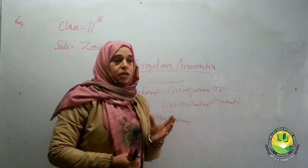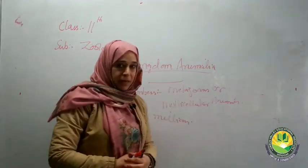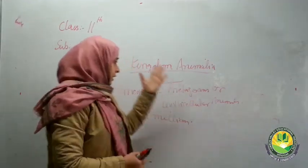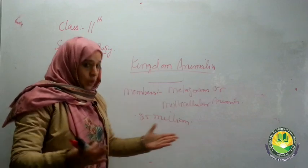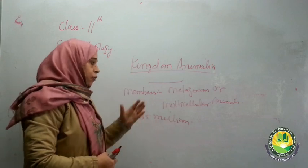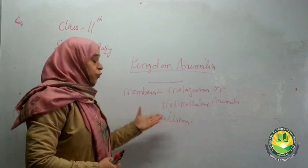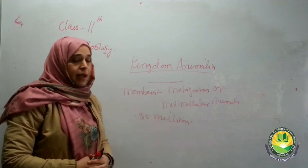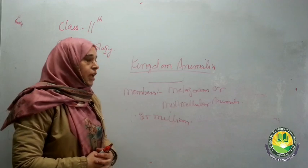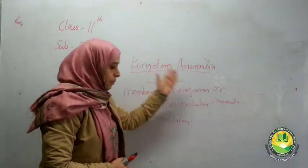Yes, it was established that there should be a certain basis of classification of Kingdom Animalia, and members were classified accordingly. Today in this lecture, we are going to discuss what were the bases on which the 1.25 million members of Kingdom Animalia were classified, named, identified, and compared. The main concern of today's lecture is the basis of classification of Kingdom Animalia.